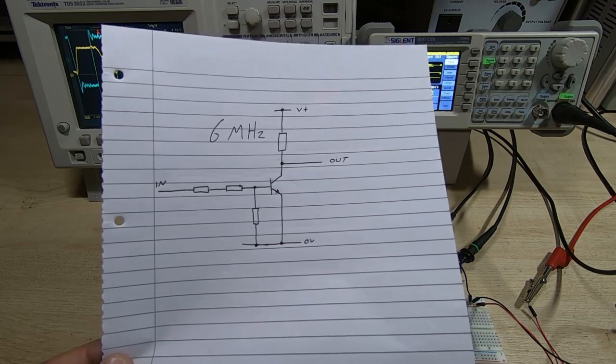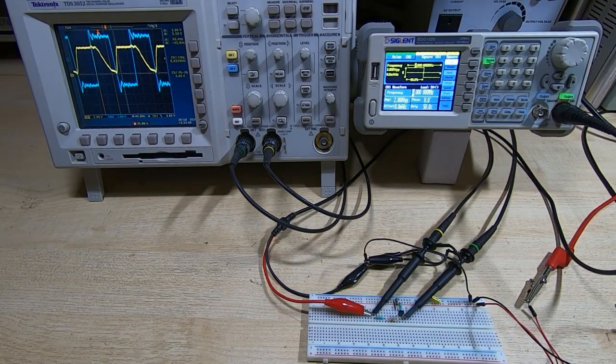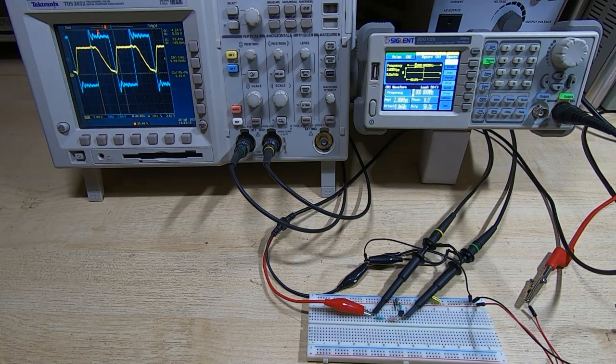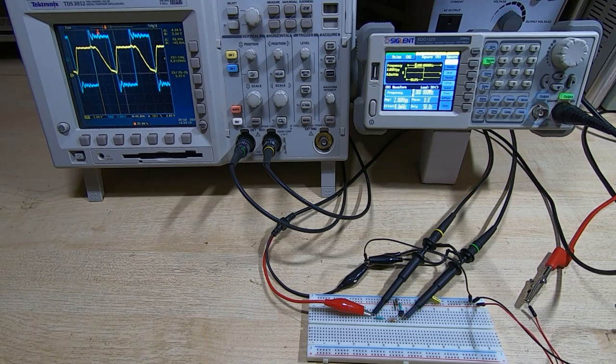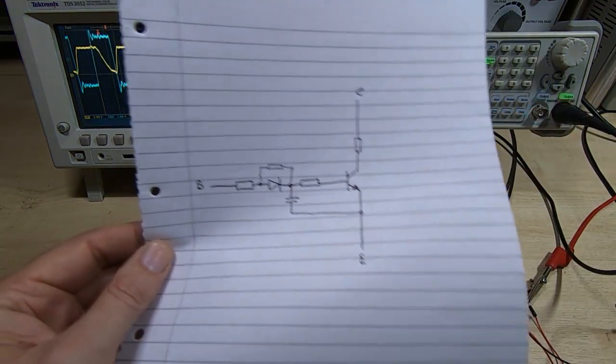Now to try and explain why we're seeing this delay in the first place, we need to look at what a transistor actually is. And the representative circuit of that is this. This is not really accurate - it's not saying this is what's inside a transistor, but this is how you can look at it in terms of the way it behaves when you apply a step signal to the input.